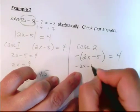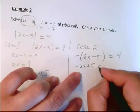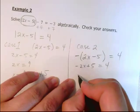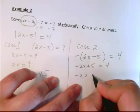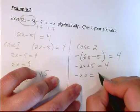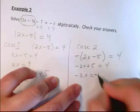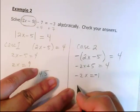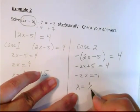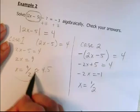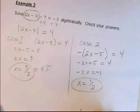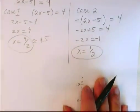And here this is negative 2x plus 5 equals 4. So we've got negative 2x equals negative 1. And then x is equal to 1 half. So there's my other solution. So I've got two answers: 9 over 2 and 1 half.